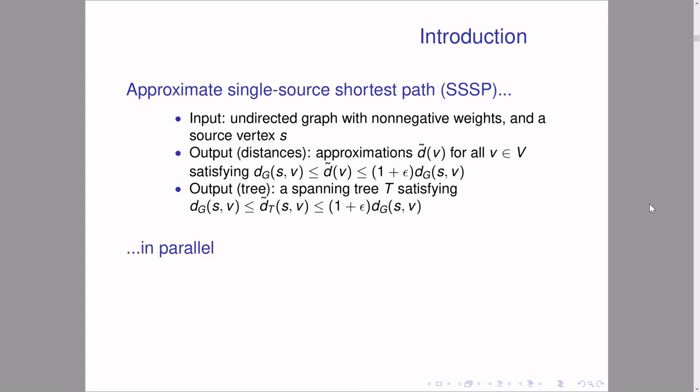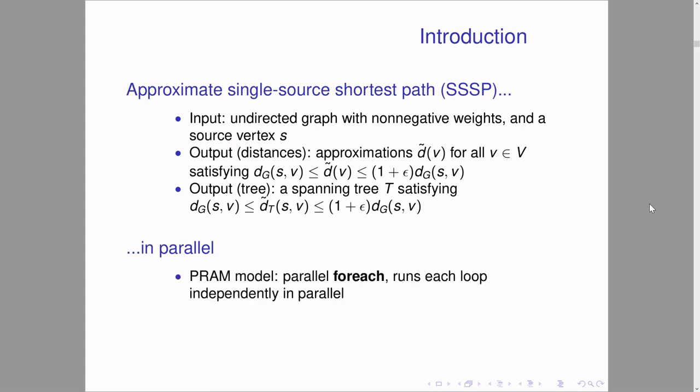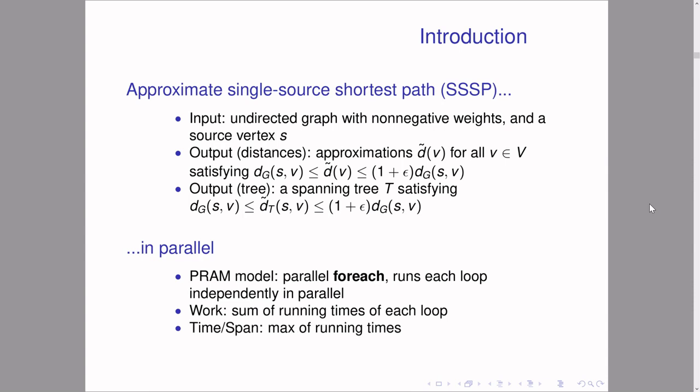The computation model in this talk will be the parallel PRAM model, which you can think of as identical to the sequential model except that there's an additional parallel for-each loop, which takes a set of iterations and runs each loop iteration independently in parallel — they must not depend on each other. We define work and span in the traditional sense: work is the sum of running times, and span is the max running time within each for-each.